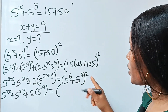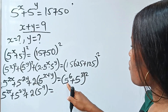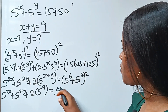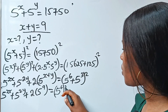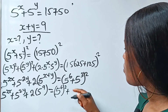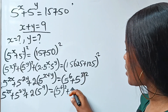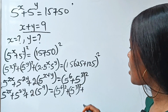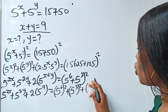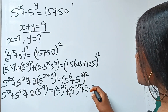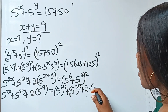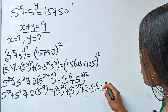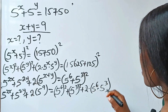Opening these brackets, we have 5 to the power of 6 squared, plus 5 to the power of 3 squared, plus 2 multiplied by 5 to the power of 6 multiplied by 5 to the power of 3.